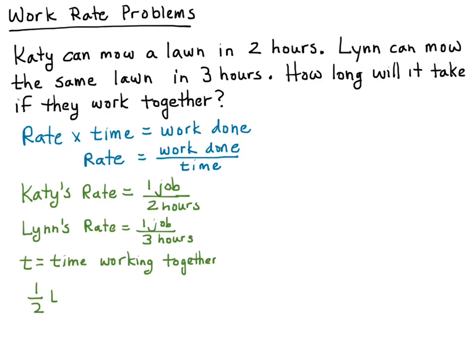We put together our model: Katie's work is 1/2—her rate—times time. Lynn's work is 1/3—her rate—times time, the same amount of time, and that equals one job. For these kinds of problems, if you're doing a single task, the right side of the equation is simply one job.